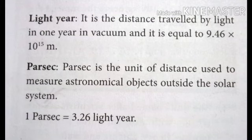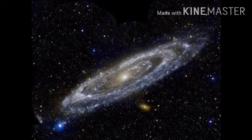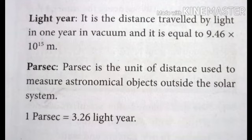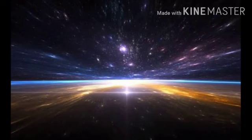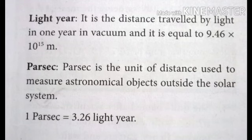A light year is the distance traveled by light in one year in vacuum, and it is equal to 9.46 × 10¹⁵ meters. Next, parsec — the outer bodies of the solar system are also measured using this unit. Parsec is a unit of distance used to measure astronomical objects outside the solar system.